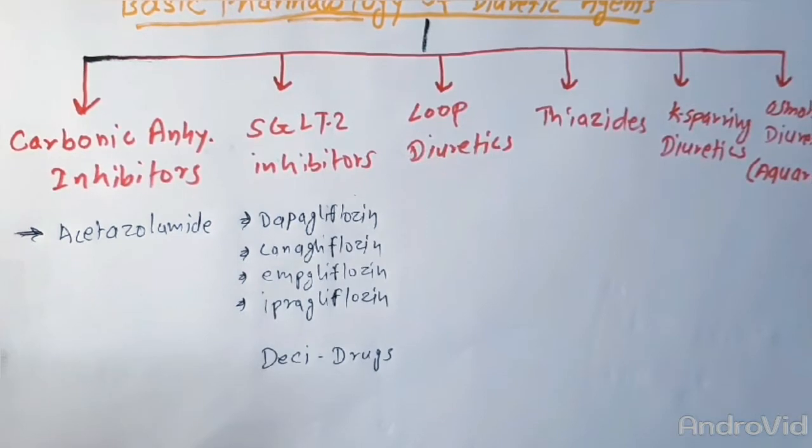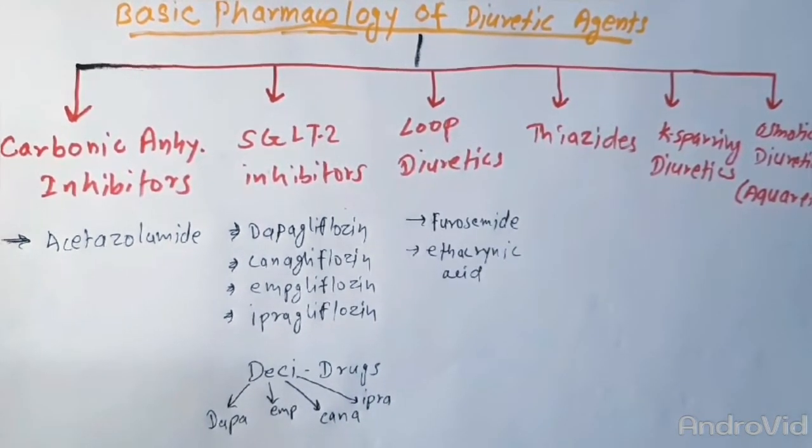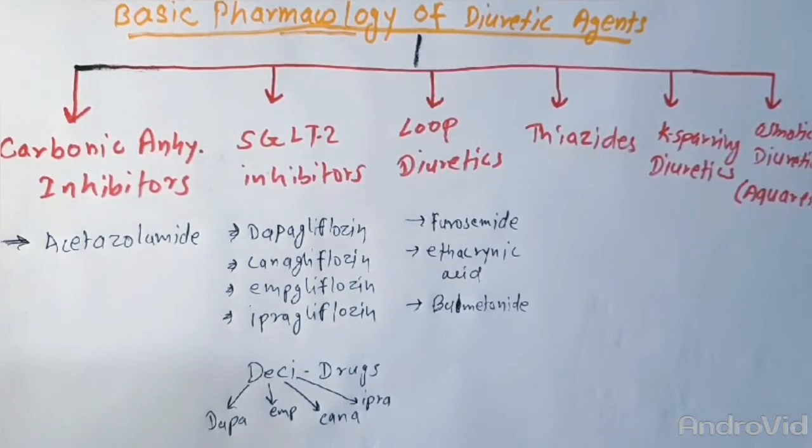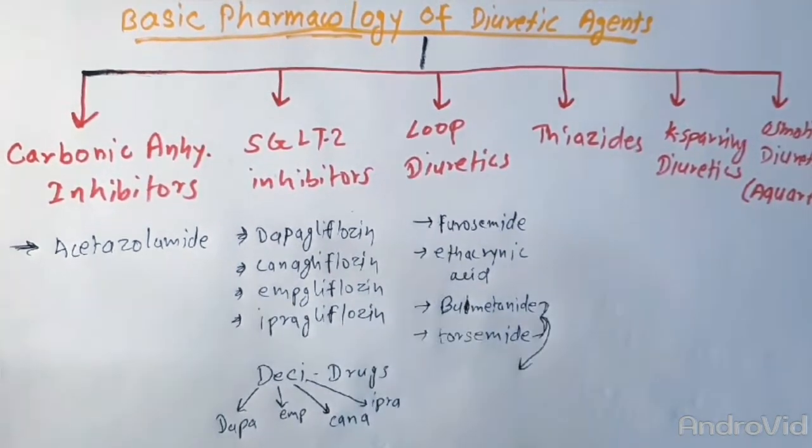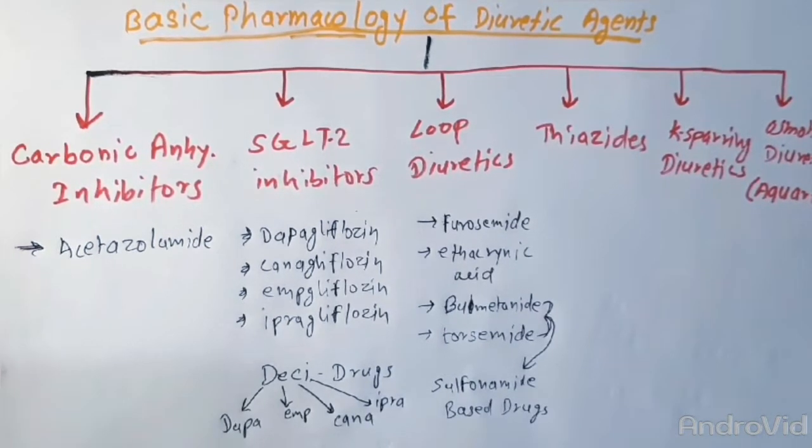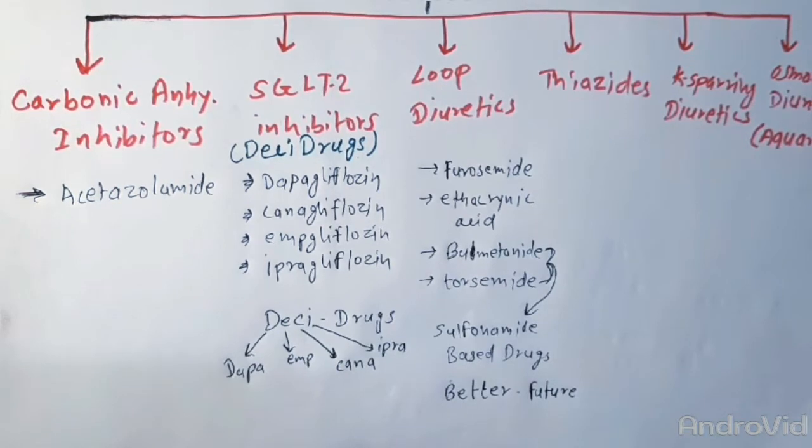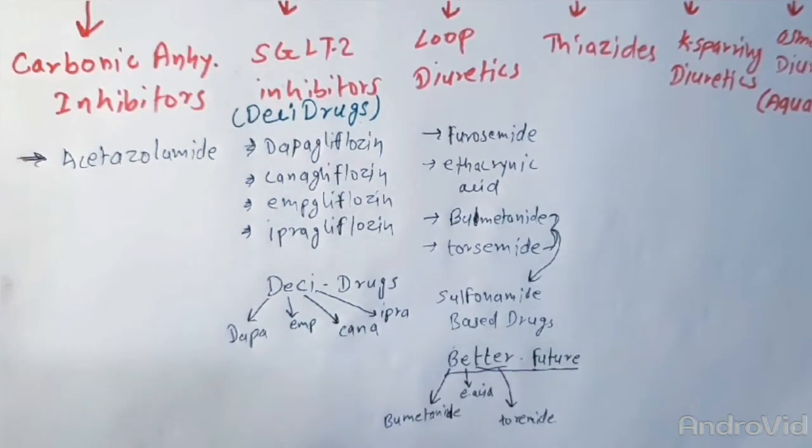The loop diuretics include furosemide, ethacrynic acid, bumetanide, and torsemide. These two are sulfonamide based drugs. We can remember this with the mnemonic Better Future: B for bumetanide, E for ethacrynic acid, T for torsemide, and future is for furosemide.